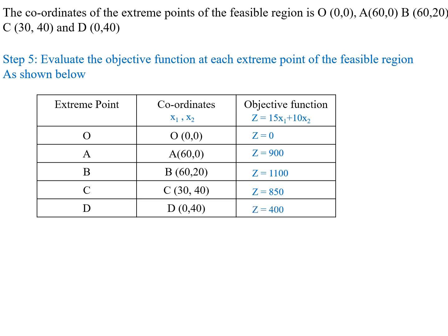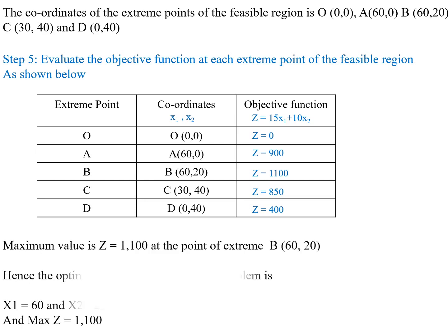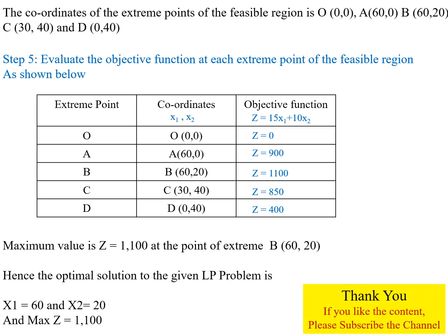Among these values, the maximum value is 1100 at extreme point B with coordinates (60, 20). Hence, the optimal solution is x1 equal to 60 and x2 equal to 20, and the maximum Z value is 1100. Thank you.